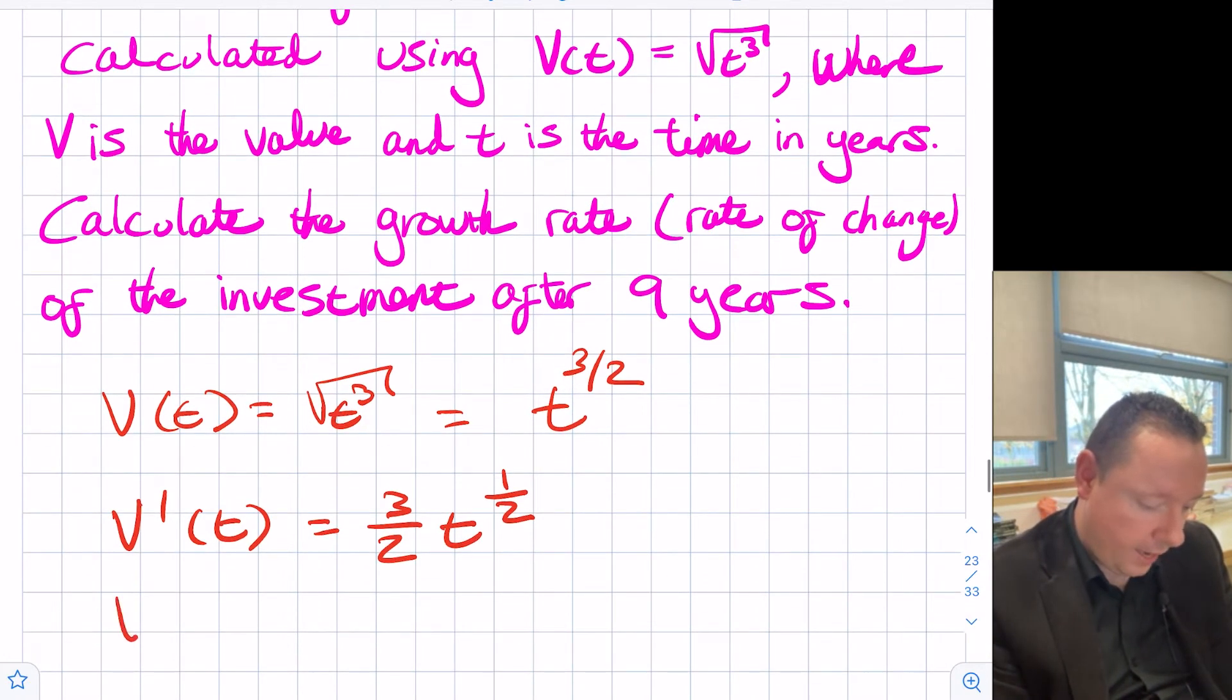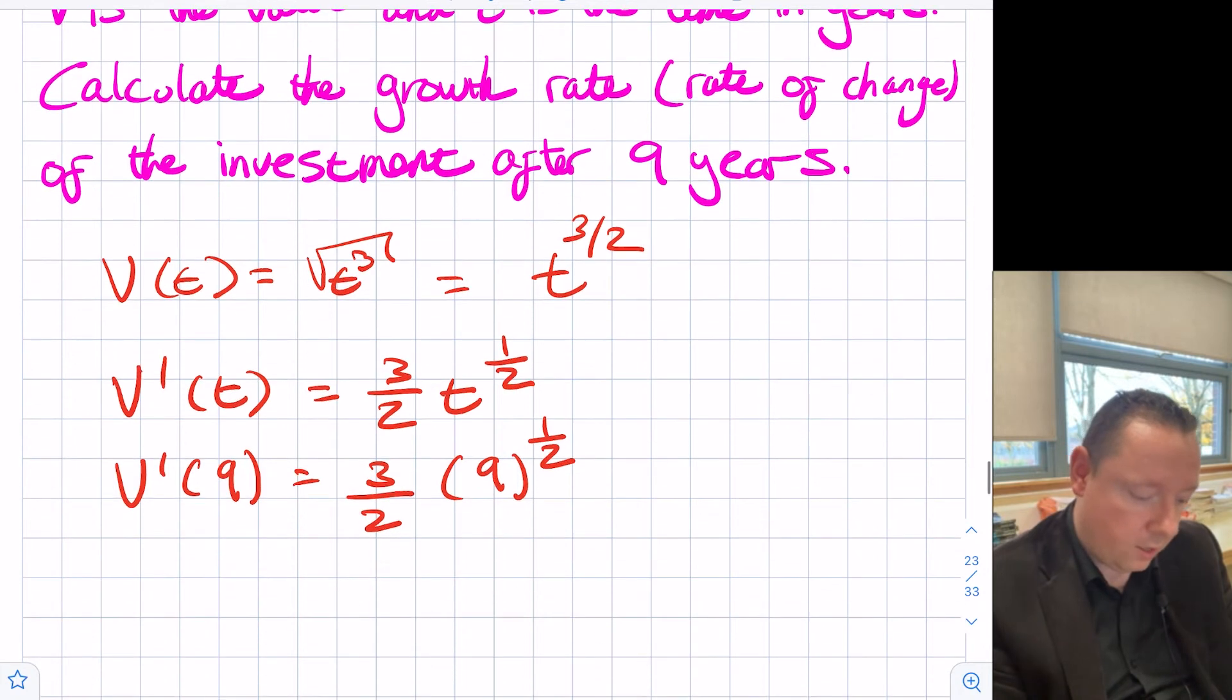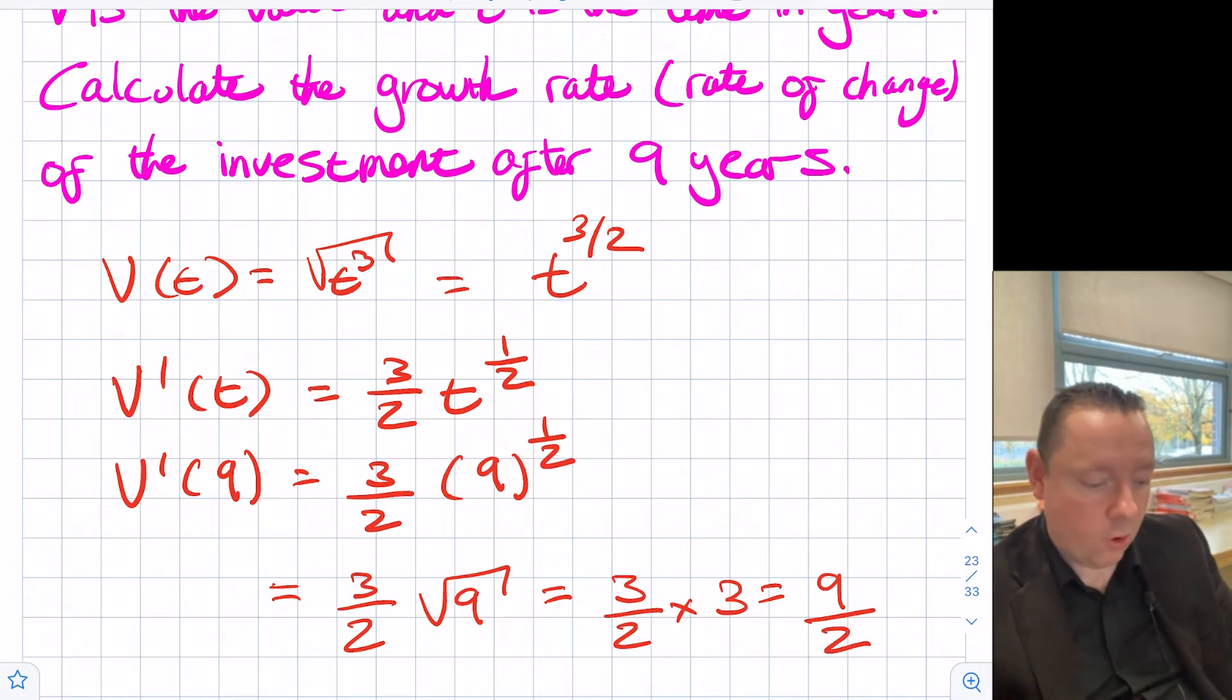So it's v dash of nine is three over two times nine to the power of a half. Now let's just assume we're doing non-calculator. So that's three over two times the square root of nine, which is three over two times three, which is nine over two. So the value of our investment after nine years is nine over two.